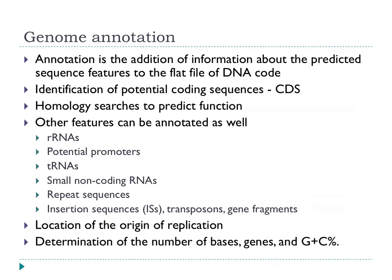Now let's settle on genome annotation, which is the heart of this lecture. Annotation is the addition of information about predicted sequence features added to that flat file of DNA code. In bacterial genome annotations, the key thing we do is identify the protein coding genes — or at least the potential protein coding genes. It's worth stressing that what we're doing is making predictions — putative potential coding sequences. We don't know for certain we've got it right, but we do the best we can. We use homology searches to predict function. We can also identify the origin of replication, count bases and genes, and determine GC content.